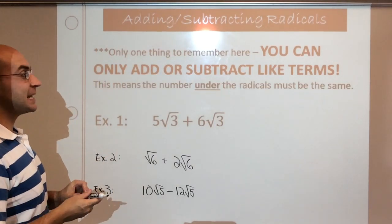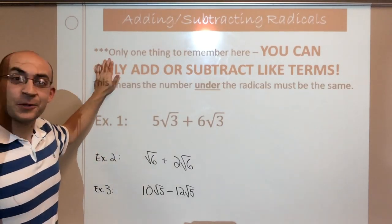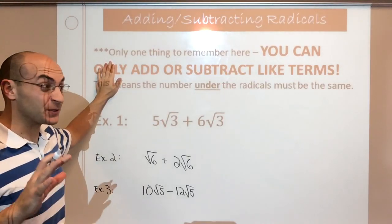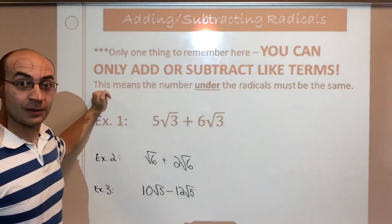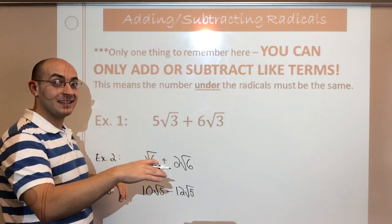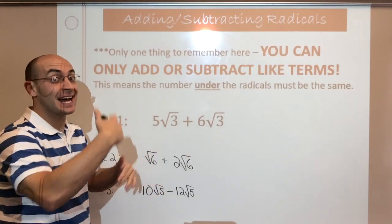Adding and subtracting radicals. Next step from simplifying. There's only one thing you can remember with adding or subtracting, and this really goes for any adding or subtracting rule. You can only add or subtract like terms. And the radical itself, the number underneath that, is what makes it like or not like.